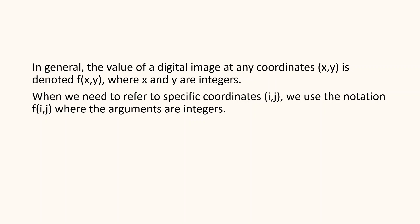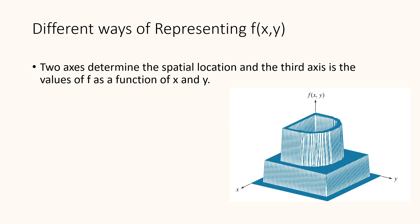Now, let us see three different ways of representing digital images. This figure is a plot of the function with two axes determining the spatial location and the third axis being the value of f as a function of x and y. This representation is useful when working with grayscale sets whose elements are expressed as triplets of the form (x,y,z), where x and y are spatial coordinates and z is the value of f at coordinate (x,y).